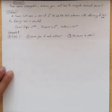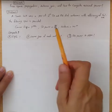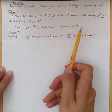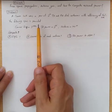Here is an example of free space propagation, antenna gain, and how to compute received power. The problem is a communication link uses a pair of 2 meter transmit and received dish antennas with efficiency of 50% each. The following specification is provided.